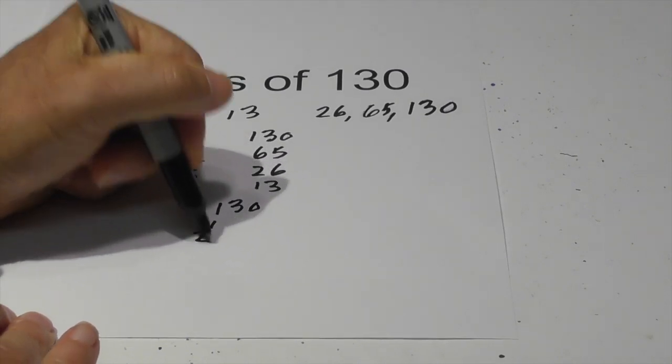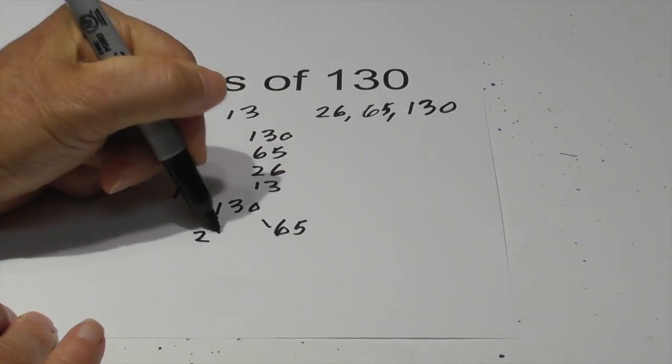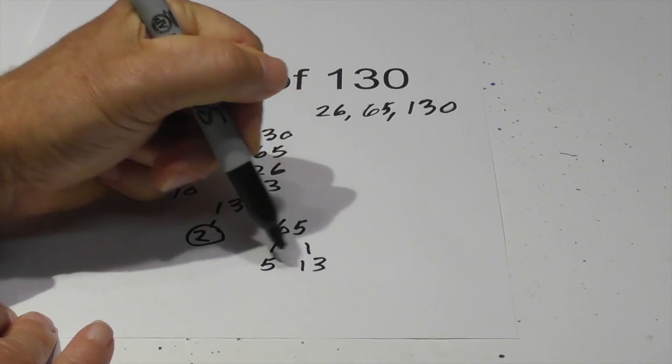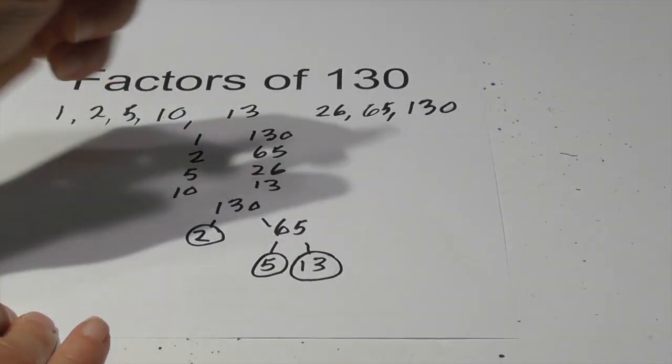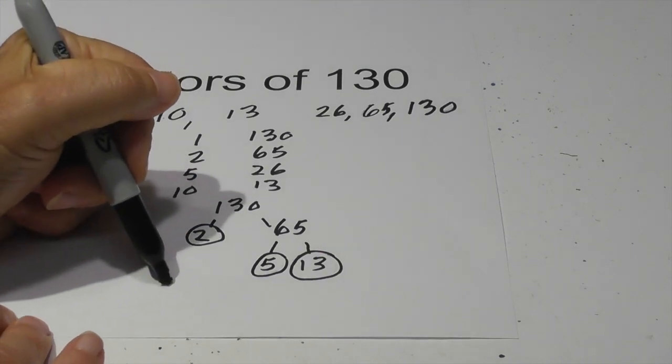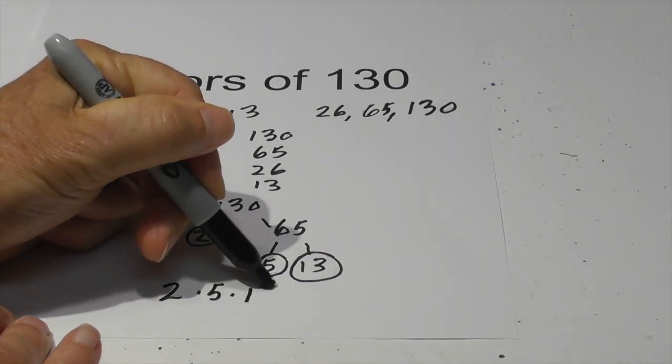Now let's create a factor tree for 130. Let's begin with 2. 2 times 65. Circle the 2 because it is prime and now 5 times 13. They are both prime so let's circle them. So the prime factorization of 130 is 2 times 5 times 13.